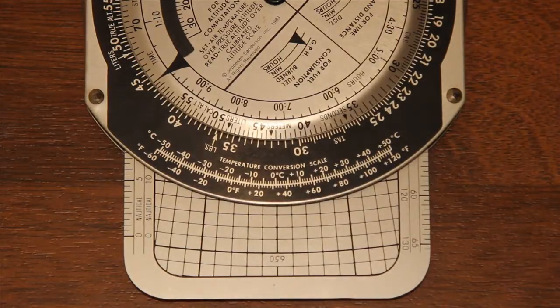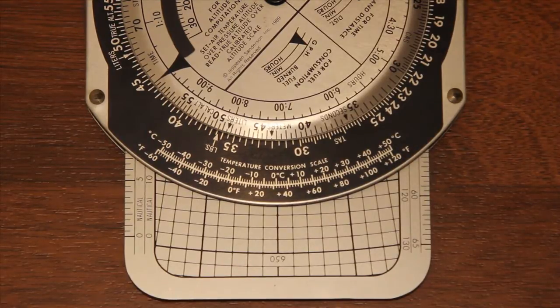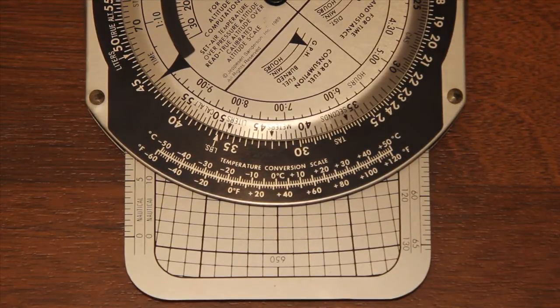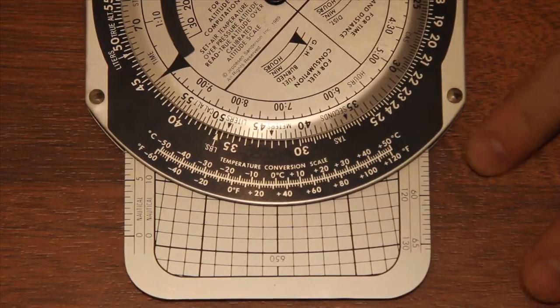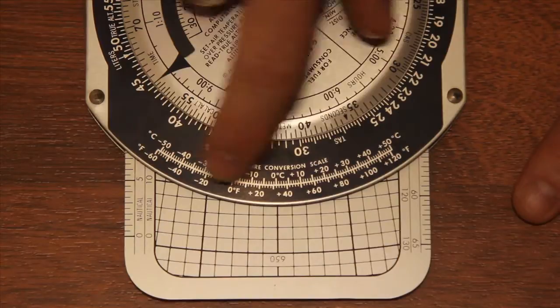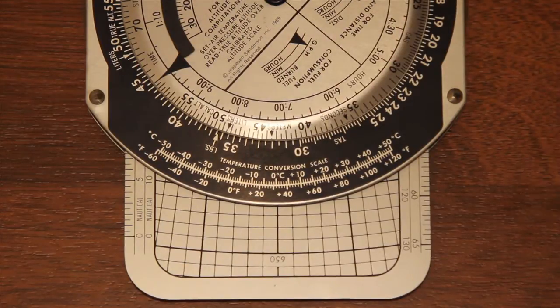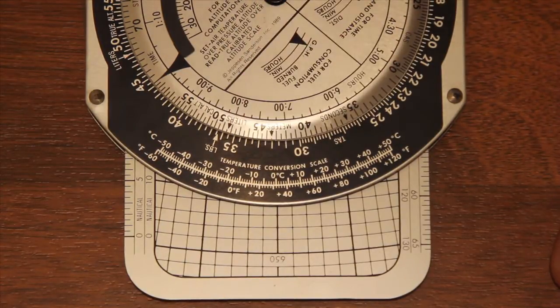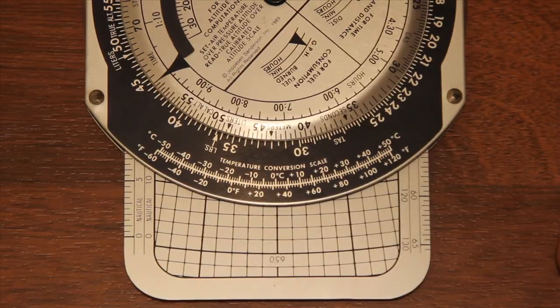So the first conversion we're going to do with the E6B is a temperature conversion and this is really simple. On the bottom of the flight computer is a fixed scale that has Celsius along one and Fahrenheit along the other, and you simply read from one to the other to get the conversion. It's no more complex than that.